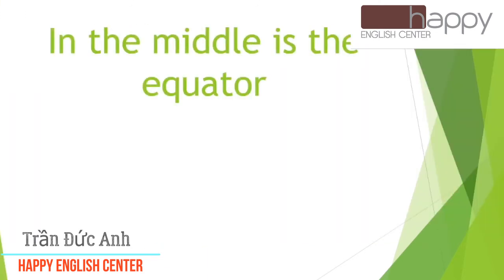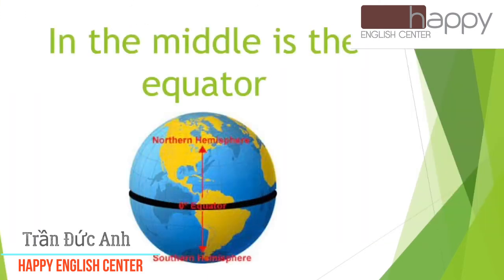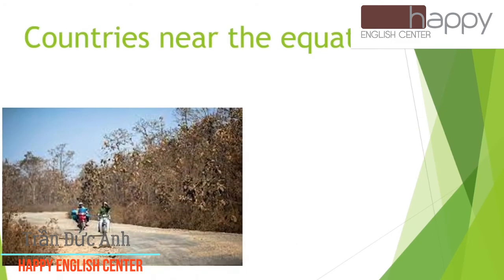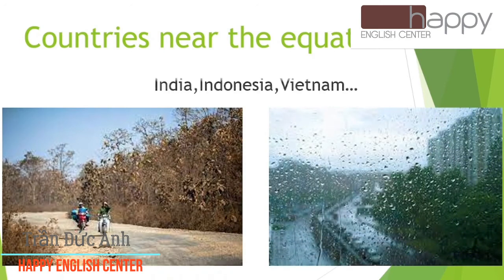In the middle is the equator. Countries near the equator only have two seasons: dry season and wet season. India, Indonesia, and Vietnam are near the equator, so they have two seasons.